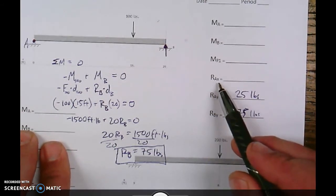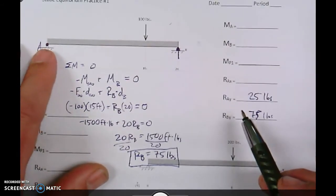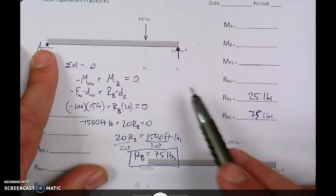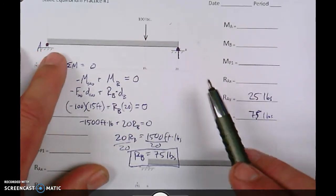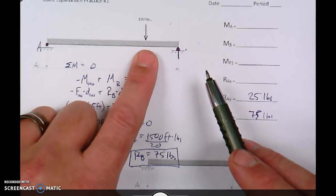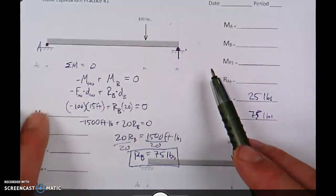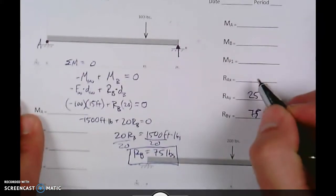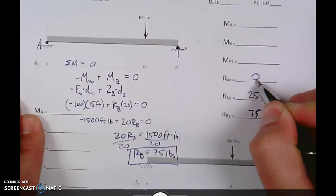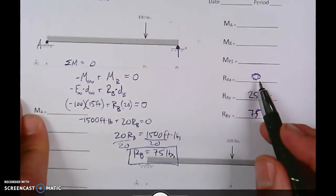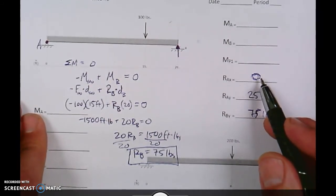The reaction force X in A. Now, remember, A is a pin, so it holds it up and down and left to right. Since there is no external horizontal force, there's only a vertical force of 100. There's nothing going left to right. There is no reaction force. Action, reaction, Newton's third law. There's no reaction in the X dimension because there is no external force in the X dimension.